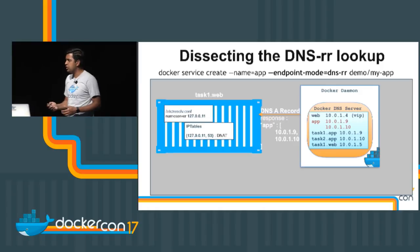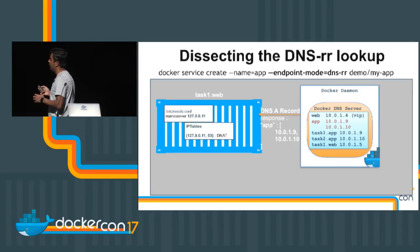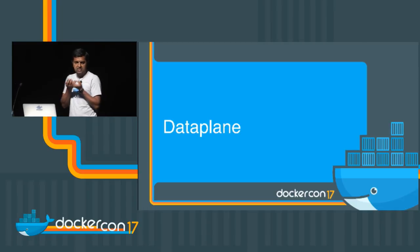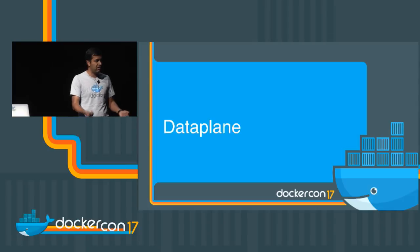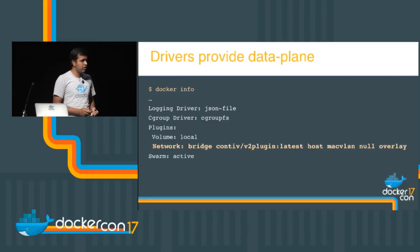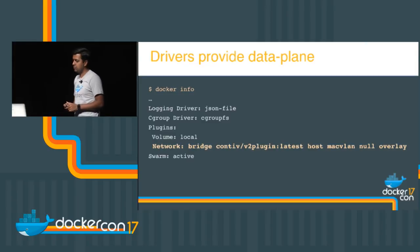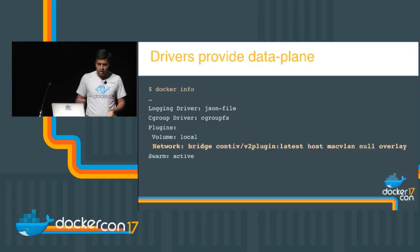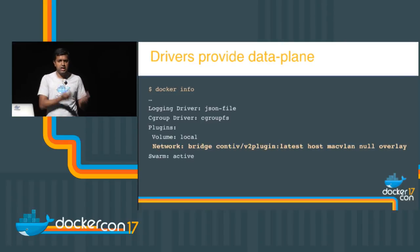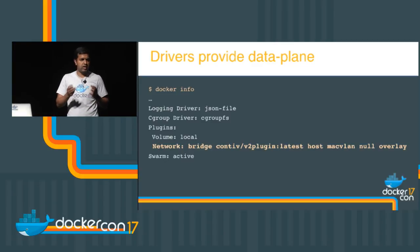Till here, we looked at how states are exchanged and how Docker uses them for service discovery. We've resolved the service name to an IP, which gets us into the data plane — how the IP is resolved by the driver and traffic is actually forwarded from A to B. The most important thing to understand is that drivers provide the data plane — libnetwork core doesn't. There are multiple built-in drivers in Docker: Bridge, Host, MacVLAN, Null, and Overlay. Service discovery and load balancing are part of Docker core, while the actual data plane of sending packets from A to B belongs to the driver.